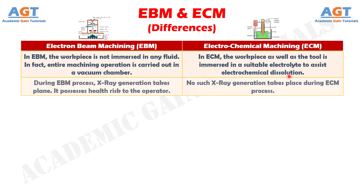Number 7: During the electron beam machining process, x-ray generation takes place, which possesses a health risk to the operator, whereas no such x-ray generation takes place during the electrochemical machining process.